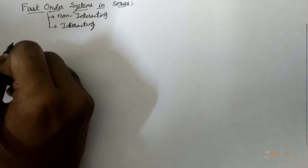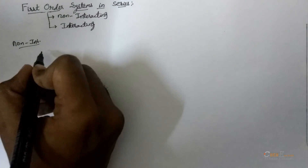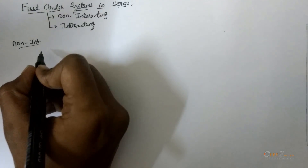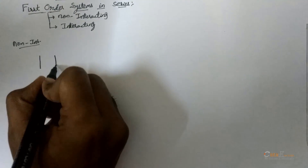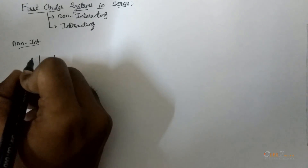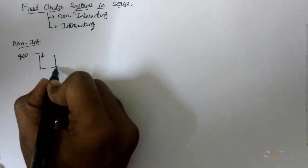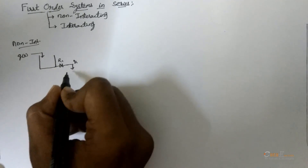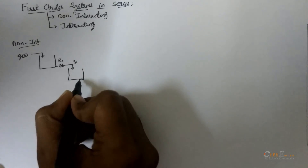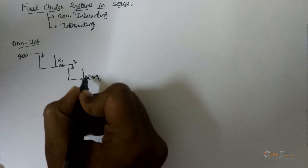First I will consider a non-interacting system. Let me consider a liquid tank which is a first order system; I will take two liquid tanks and arrange them in series. This is the first tank which is having an inlet flow rate Q and having a resistance R1, and the outlet flow rate is Q1, which is connected to another tank in series which is having the outlet flow rate Q2 and another resistance R2.